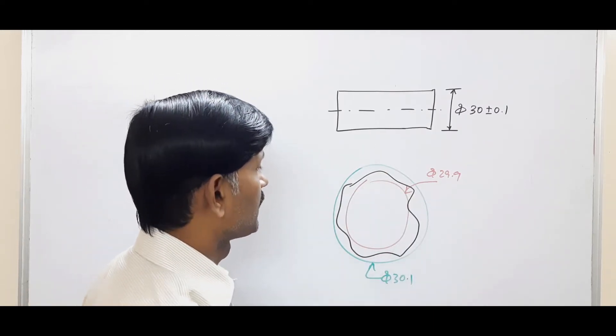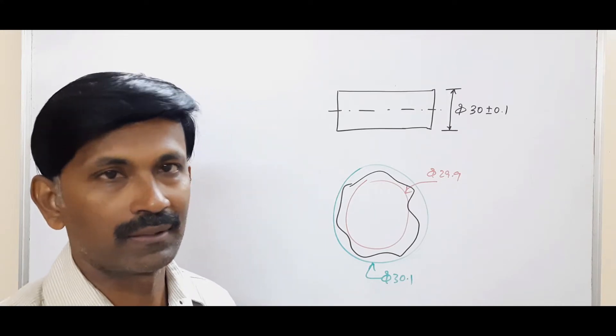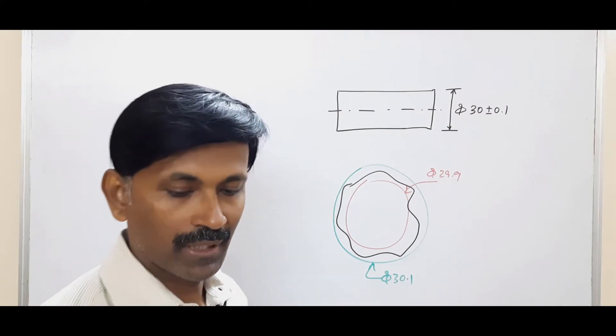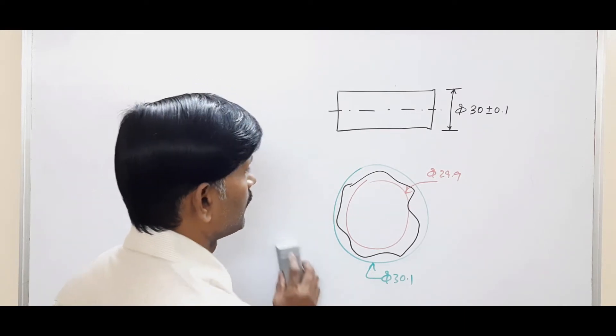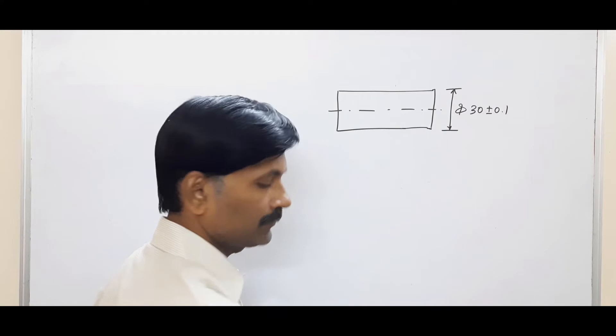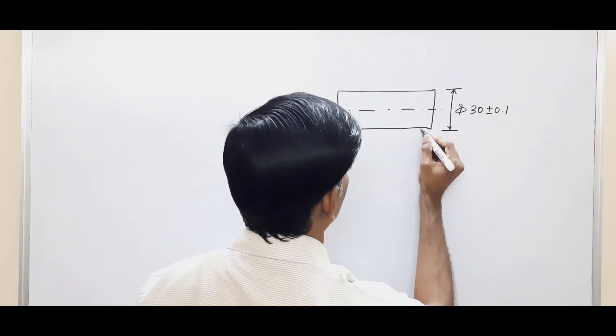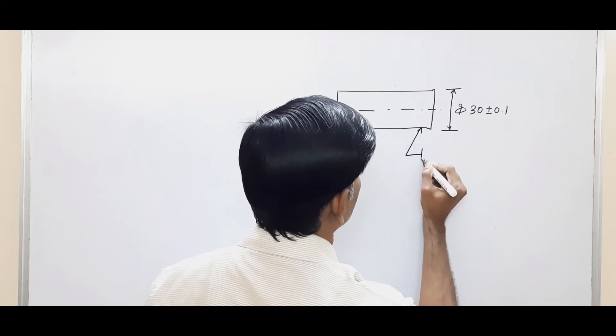Now if I want to have better circular control, then we have to have the circularity tolerance. We draw a leader line on the surface with a feature control frame.